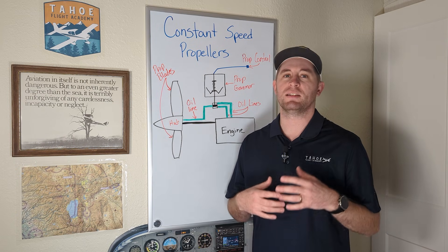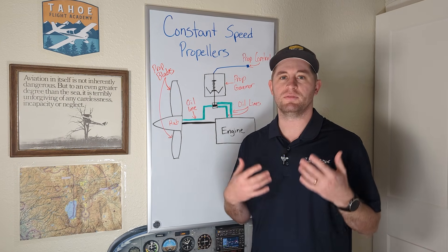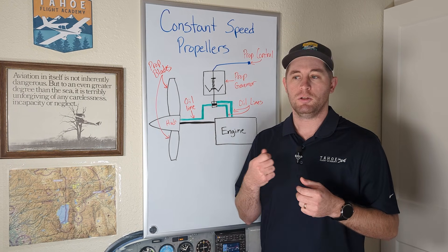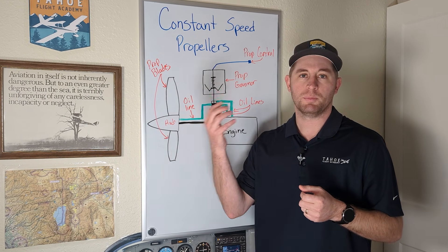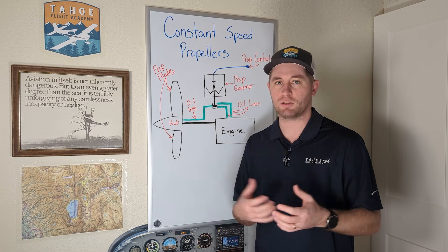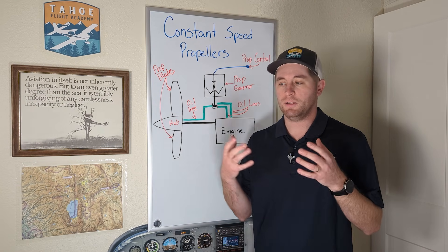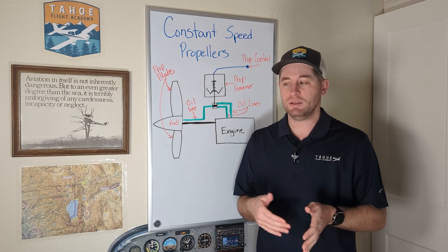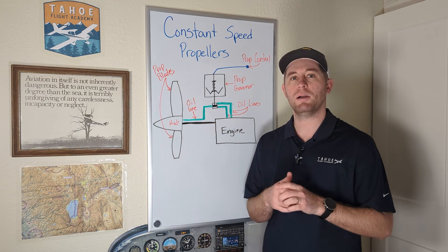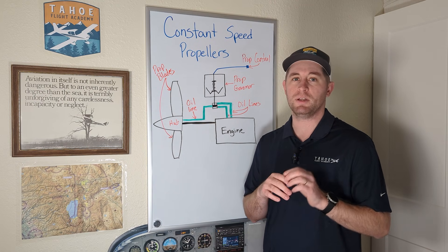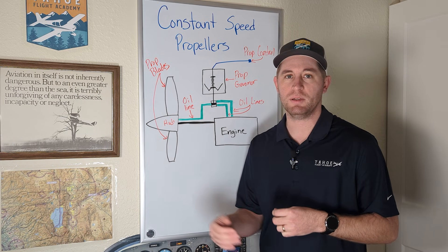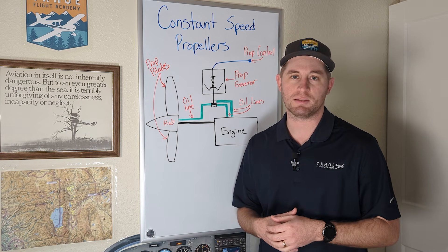Let's first talk about why they exist in the first place. If you're familiar with a fixed pitch prop, you know that the blade angle never changes. It's set and your power directly controls the propeller and engine RPM. This means you have to sacrifice performance somewhere on the spectrum, as fixed pitch props are either set to maximize climb performance, maximize cruise performance, or a compromise somewhere in the middle. However, with a constant speed prop, you get to have your cake and eat it too, which means you can maximize climb performance while being able to cruise as fast and efficiently as possible.